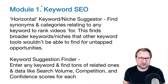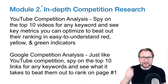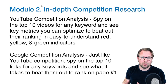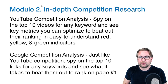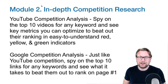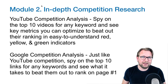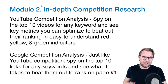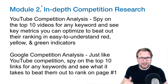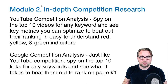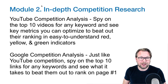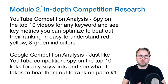You also have a keyword suggestion finder where you can enter any keyword and find tons of related ones, with data like search volume, competition, and confidence score for each. The second module is an in-depth competition research tool — a YouTube competition analysis that spies on the top 10 videos for any keyword and shows key metrics in easy-to-understand red, yellow, and green indicators so you can see visually whether you can rank for certain keywords.